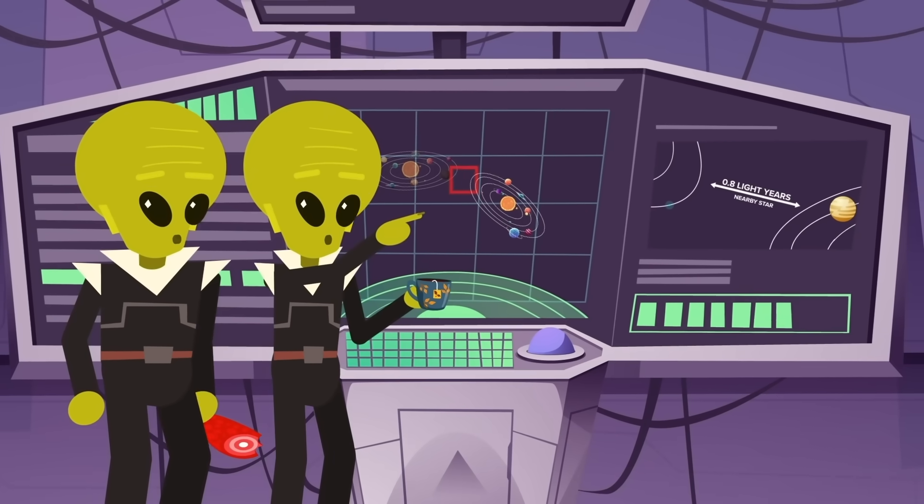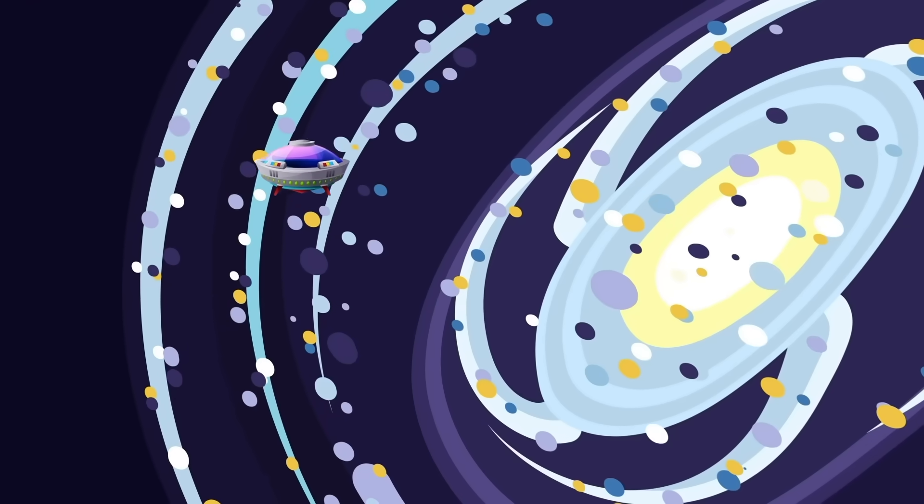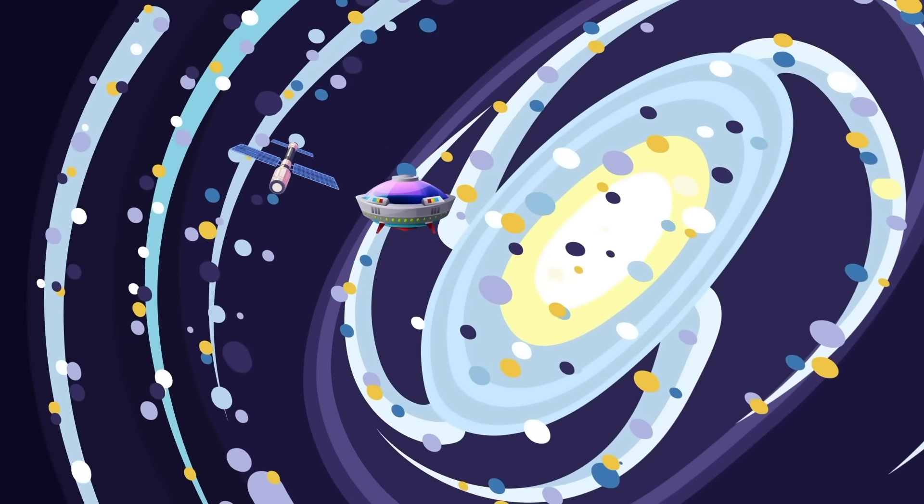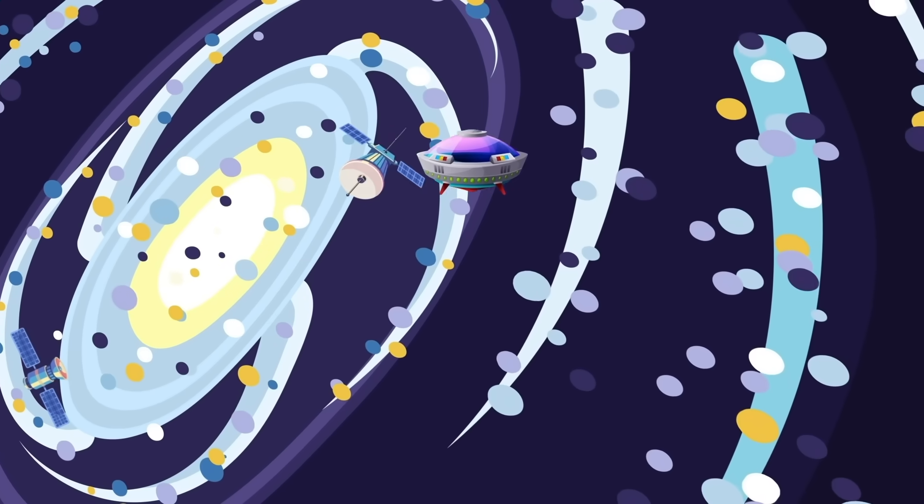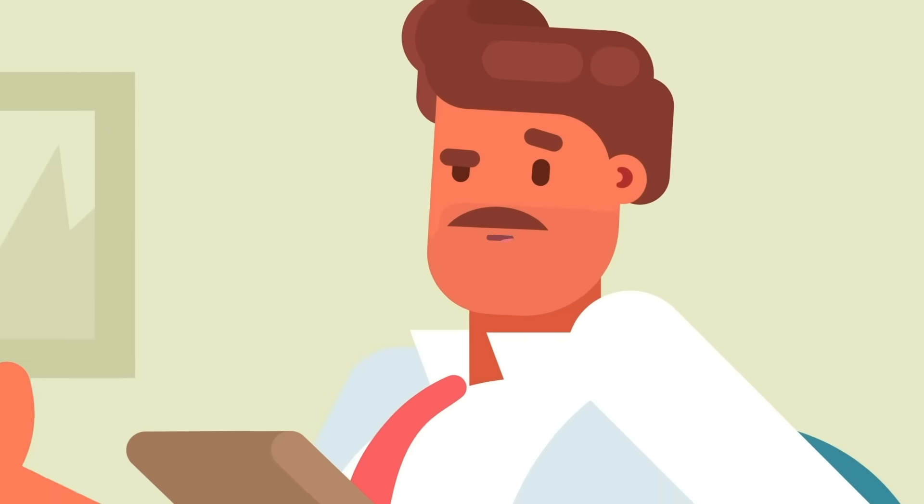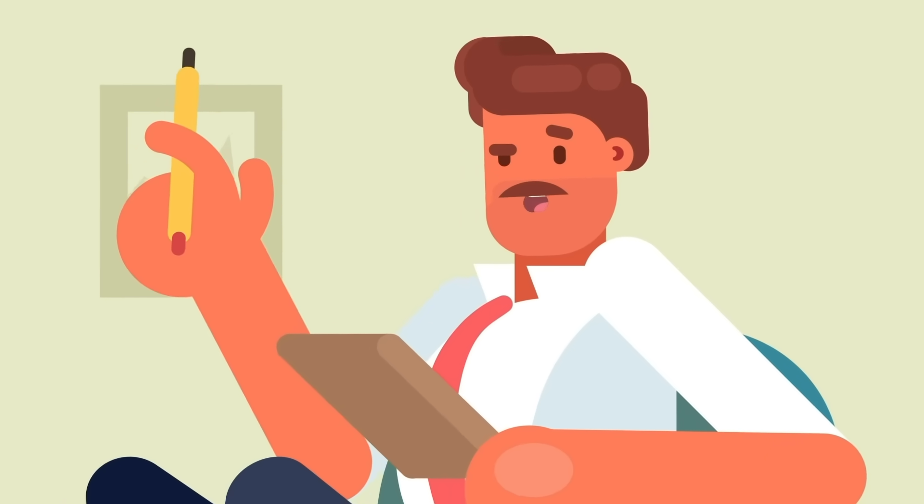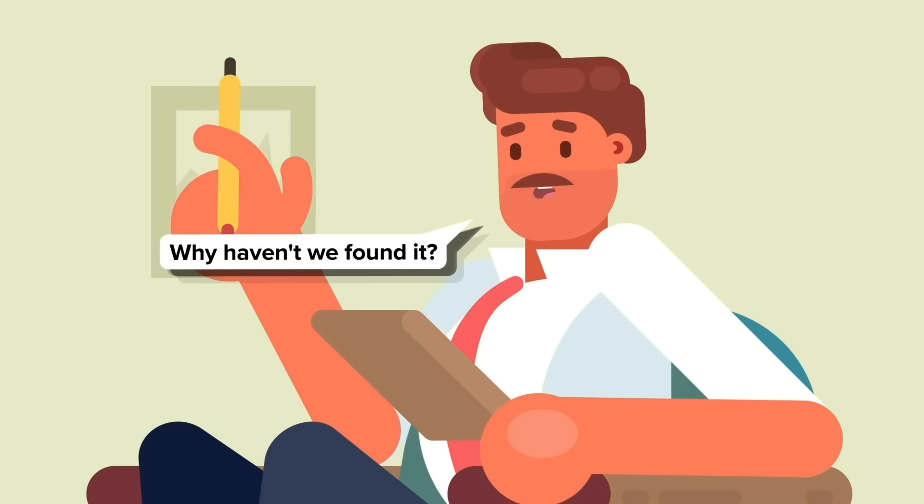70,000 years ago, our solar system came within 0.8 light years of a nearby star. A long-lasting alien species could simply play hopscotch across the galaxy, moving from system to system in this fashion, and still put probes in most of the galaxy within a few million years. So the real question we should be asking isn't, is it possible there's alien technology in our solar system, but rather, why haven't we found it?